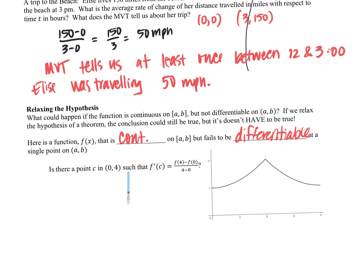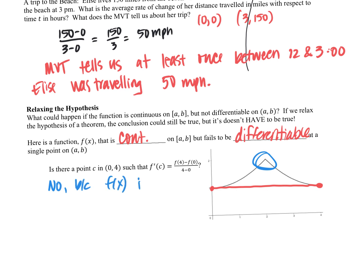Is there a point C — an x value between zero and four — such that the derivative would equal the average rate of change? This is just my average rate of change from zero to four. My average rate of change would be zero because it's horizontal. Does it look like there's another point that has the same slope? We've got a cusp or corner there — we can't have a slope at a cusp or corner. It's not differentiable there. So we're going to say no, because my function is not differentiable on that interval from zero to four. The mean value theorem does not apply.